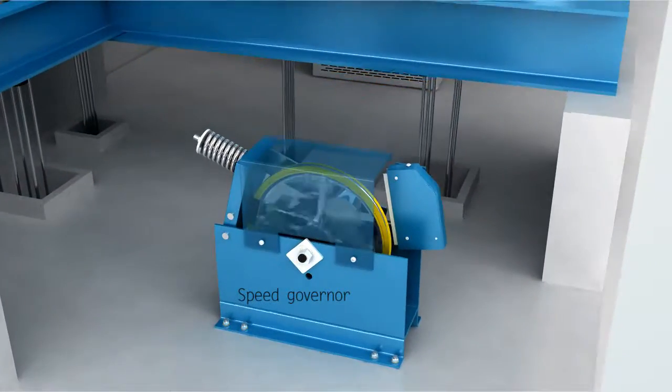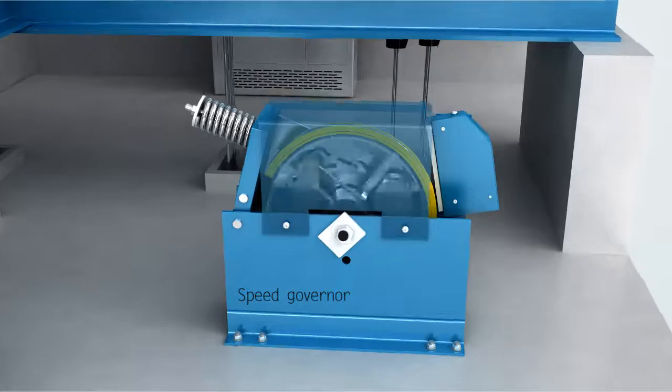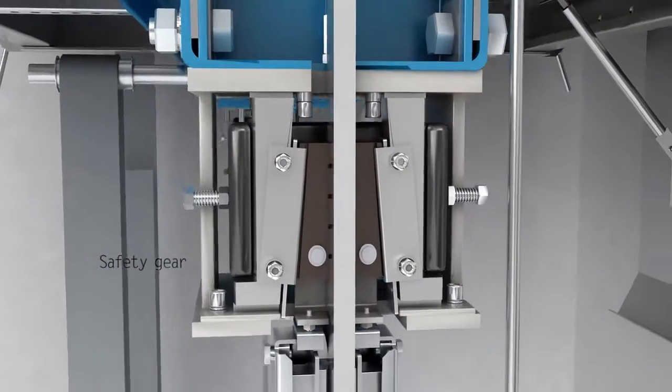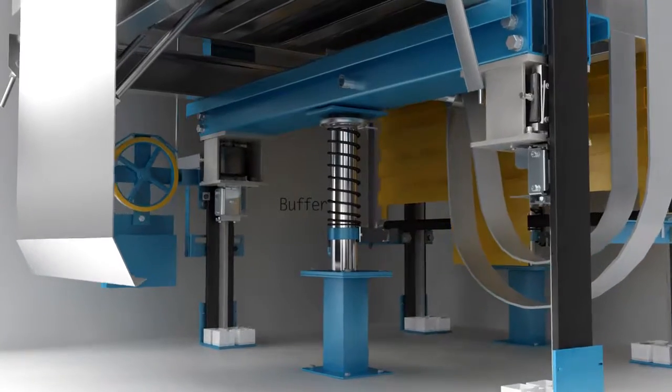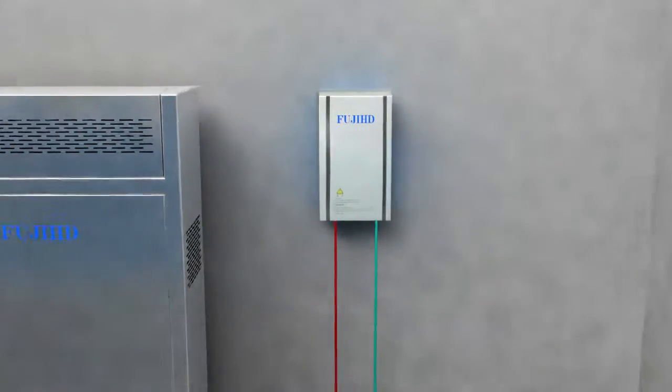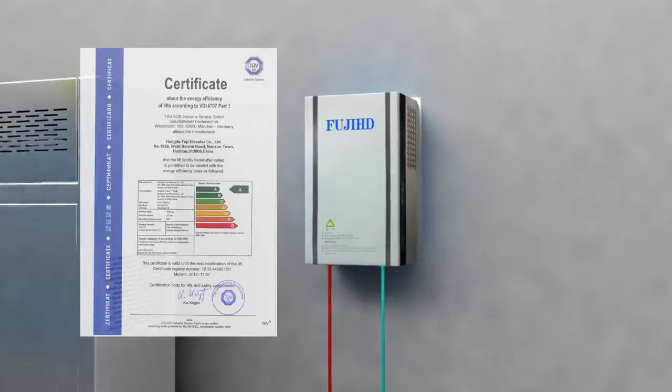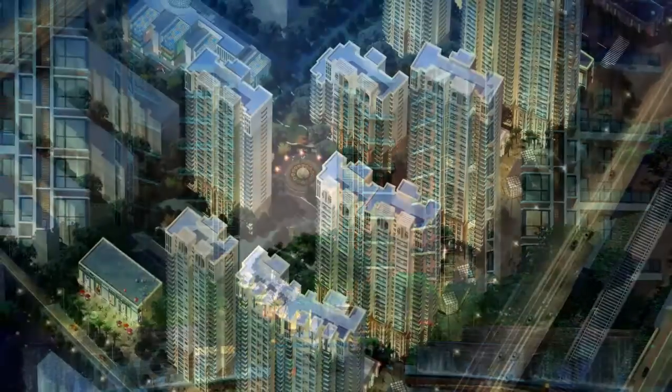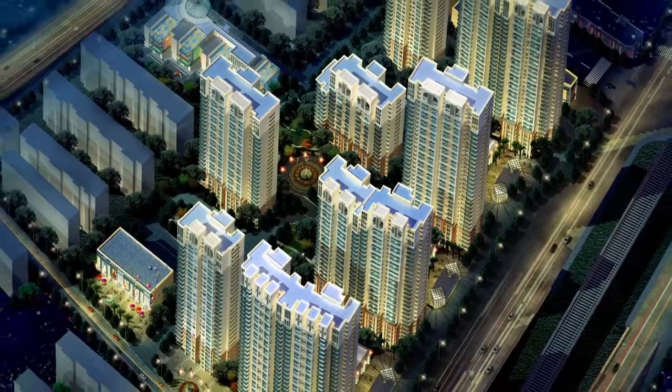Speed governor, safety gear, buffer - three major safety parts link with each other, achieving perfect and reliable security system. Green energy feedback technology transfers operation potential energy into electrical energy to feedback power grid for use of surrounding electrics with comprehensive energy saving reaching 50%.